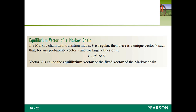Vector V can be determined by finding P to the nth power for larger and larger values of N and then looking for the vector that the product v times P to the N approaches. That's how we did that problem — we saw what vector these calculations approach as N gets larger, and that turned out to be our equilibrium vector.